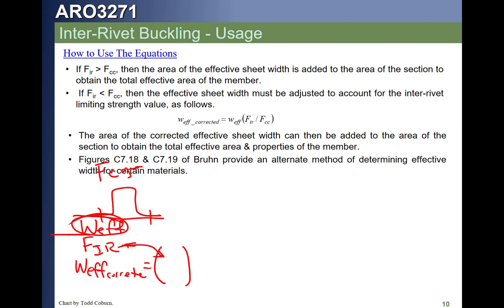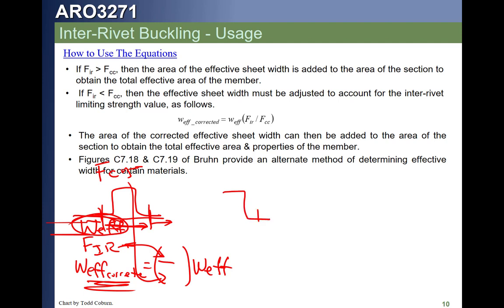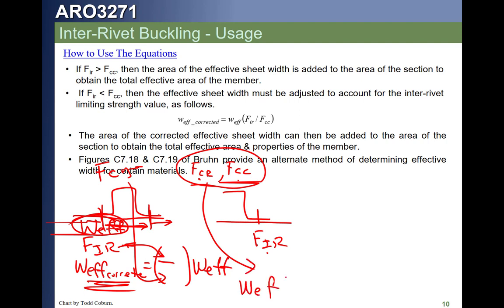Once we have the adjusted effective width, we use 15t on each outer side, then either 30t or the actual spacing between fasteners in the middle. For a stringer where we do full analysis — checking f_cr using the Euler equation and f_cc using crippling allowable, taking the smallest — we calculate f_ir and compare it to that minimum, then adjust our effective width accordingly. That tells us how much skin to use.